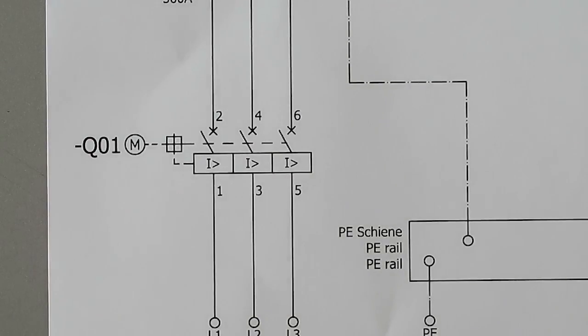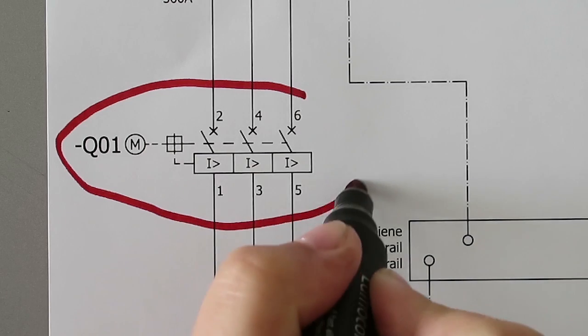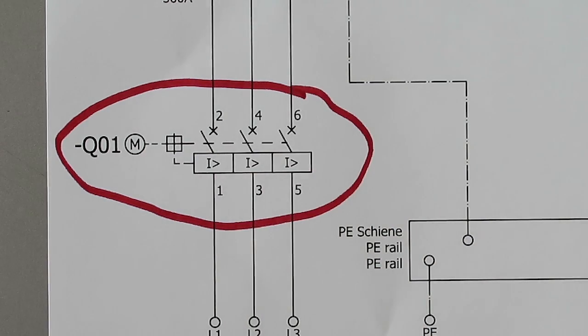The main switch can be replaced by a circuit breaker, which can be operated manually or motorized.